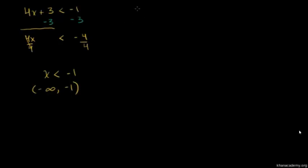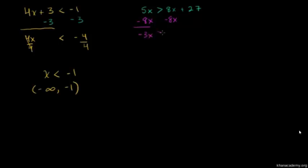Let's do a slightly harder one. Let's say we have 5x is greater than 8x plus 27. Let's get all our x's on the left hand side. The best way to do that is subtract 8x from both sides. The left hand side becomes 5x minus 8x, which is negative 3x. We still have a greater than sign — we're just adding or subtracting the same quantity to both sides. The 8x's cancel out and you're left with 27. So you have negative 3x is greater than 27.